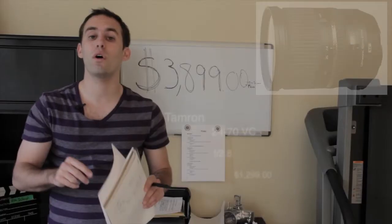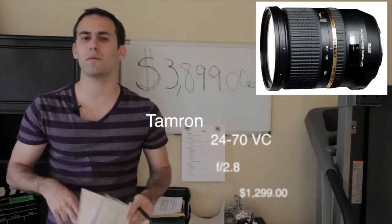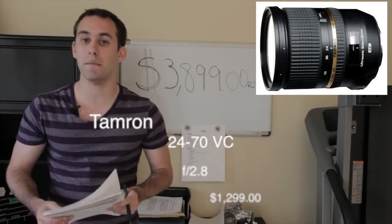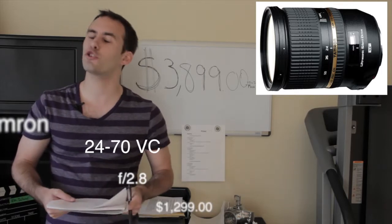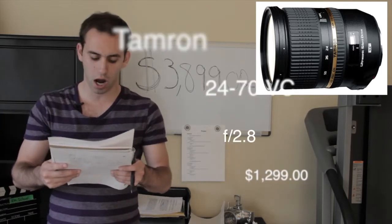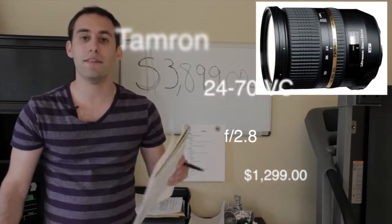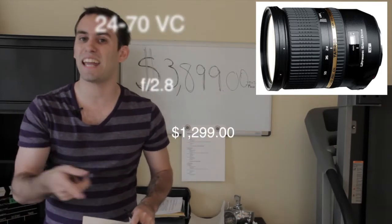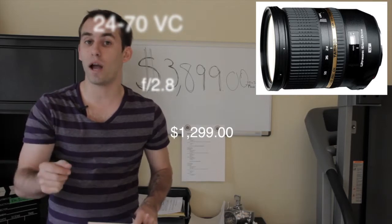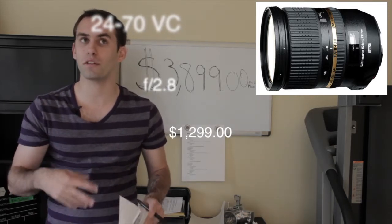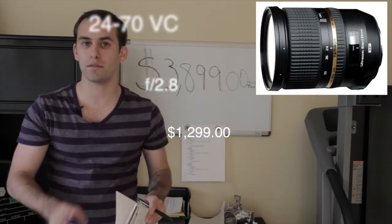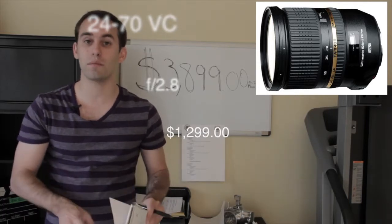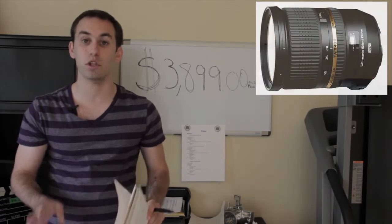Next lens is the Tamron 24-70mm f2.8 lens. It also has IS, or as Tamron likes to call VC, which means vibration compensation. This lens is about $1,299, actually half the price of the Canon 24-70mm f2.8 II, which is about $2,500. And that Canon lens does not have IS. This Tamron, I've watched reviews, seen people use it, and it's really good too.